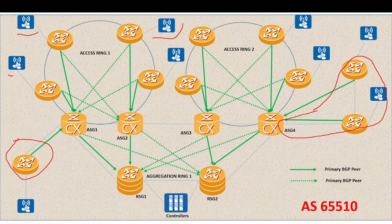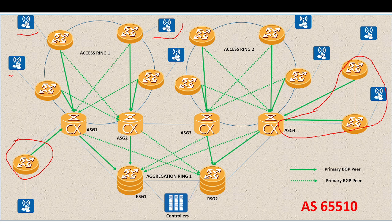Why do we deploy BGP on the IPRAN network? We are using MPLS on our network, and to exchange label routes or VPN routes we need a protocol that supports this exchange — that is the main reason for using BGP. This enables us to exchange service routes all the way from base stations to the controllers. We'll be running BGP between the SGs, RSGs, and CSGs. For a ring setup, we establish two peering sessions: a primary BGP session and a secondary BGP session.